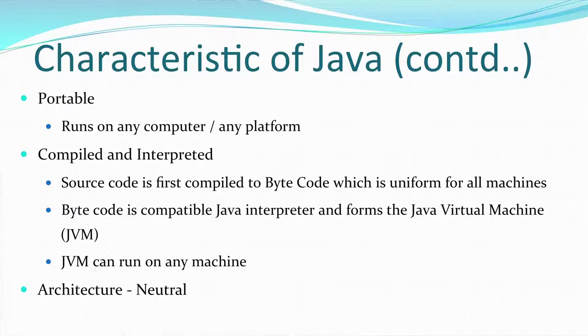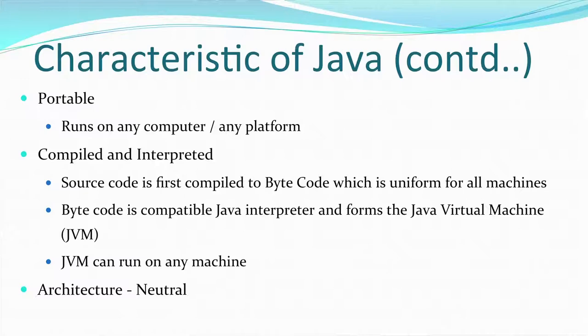Another characteristic of Java is that it is both a compiled and interpreted language. When you write Java source code, that source code is compiled to form byte code. This byte code, along with the interpreter, forms the Java Virtual Machine, which can run on any platform. It is compiled up to byte code and then interpreted to form the JVM. This is a characteristic found in very few languages — languages are usually either compiled or interpreted, but Java is both, which gives it a distinct advantage.